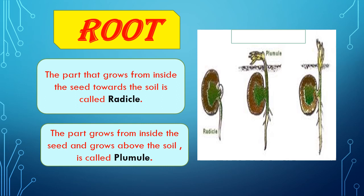What is root? Root is the part of a plant which grows below the soil surface. When the seed germinates, there is a radicle and plumule in the seed. Radicle is the part that grows from inside the seed towards the soil. While plumule is the part that grows from inside the seed and grows above the soil. You can see on your screen: radicle grows in a downward direction while the plumule grows in an upward direction.